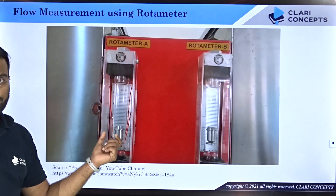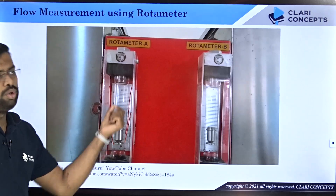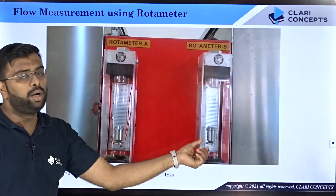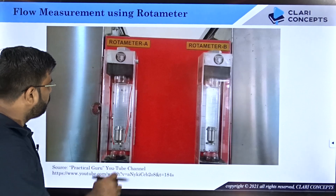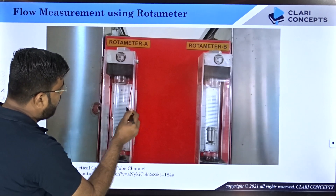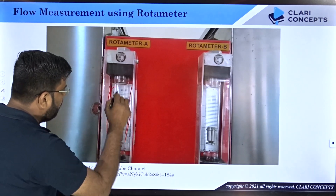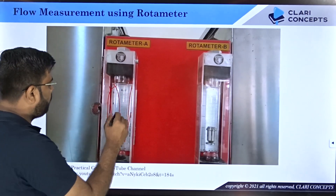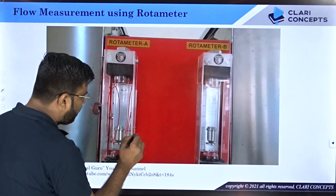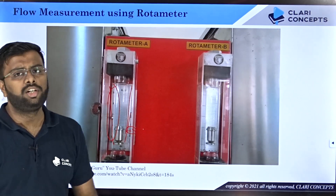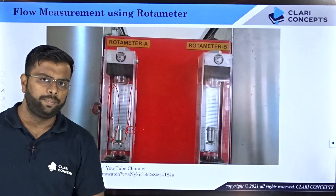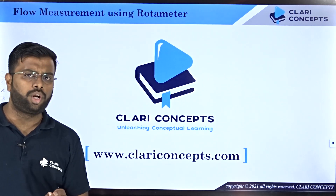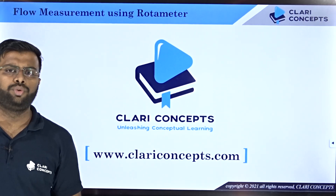I hope you understood how the rotameter position is linked with the flow rate value. This tube-type rotameter comes directly with markings on the scale — depending on the position of the float you can easily read the flow rate; for example, if the float is at a marking of 6, that means 6 liters per minute is the fluid flow rate. Thank you so much — see you soon in the next class.